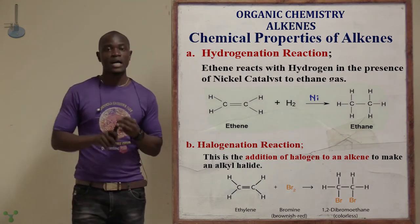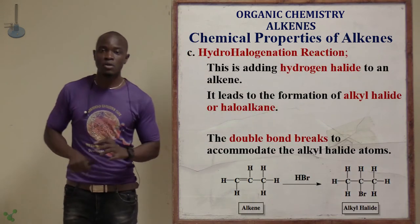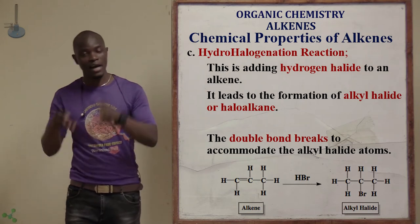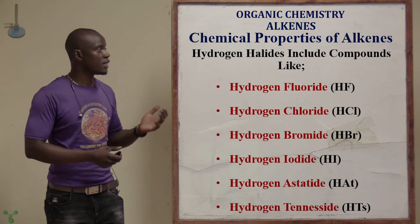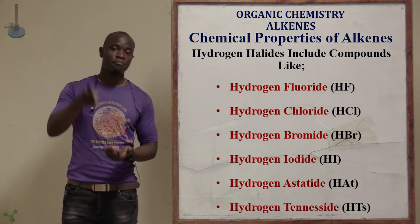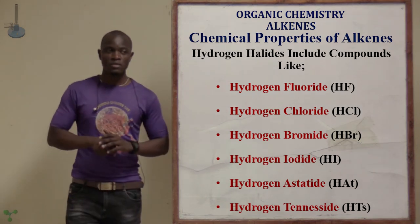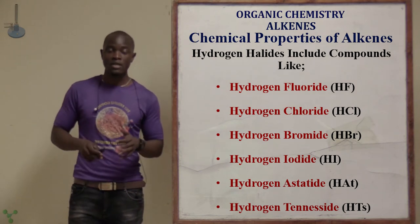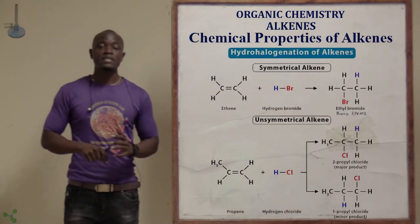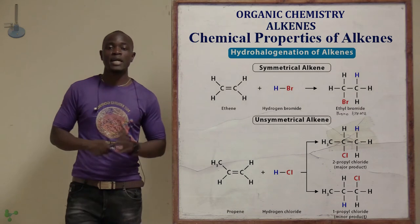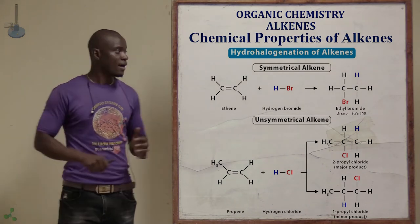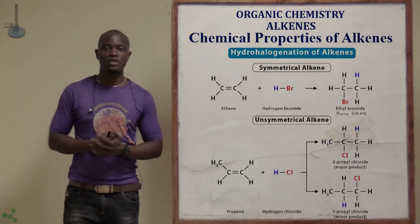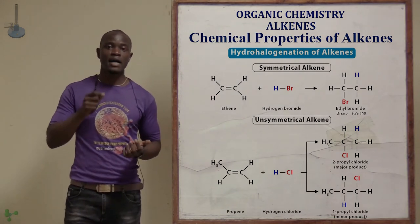The third type is hydrohalogenation — this is reacting a hydrogen halide with an alkene. Hydrogen halides include hydrogen fluoride, hydrogen chloride, hydrogen bromide, and hydrogen iodide — only group seven members are halides. For example, if we react ethene with hydrogen bromide, we get bromoethane. We can also react hydrogen chloride to get chloroethane. That is another example of an addition reaction.